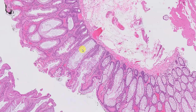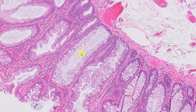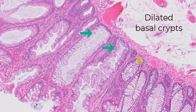There are three things you're looking for at the base. The first is dilated crypts. Here's a narrow crypt — this is what a narrow crypt should look like. Unequivocal dilatation of the crypts is criteria number one.